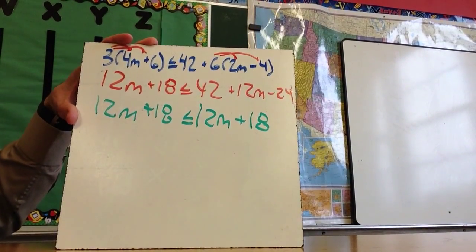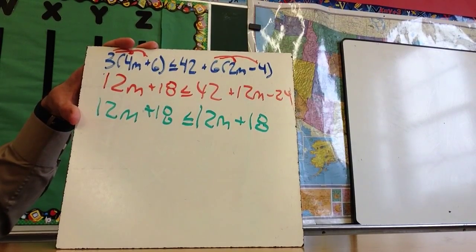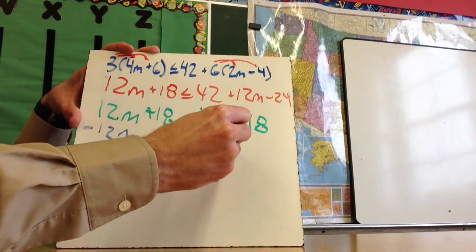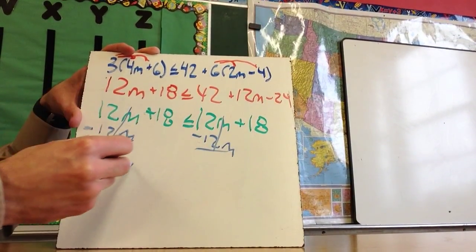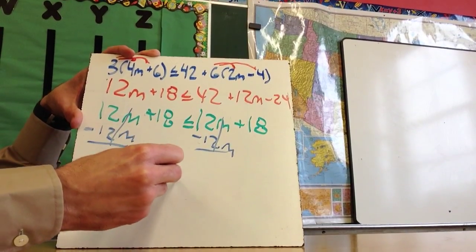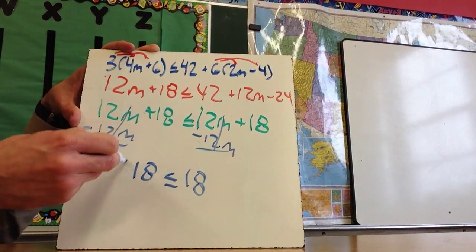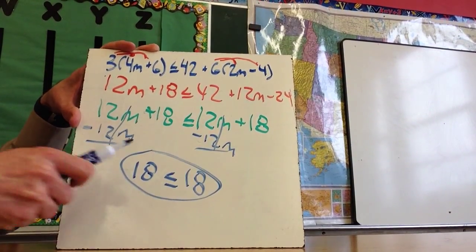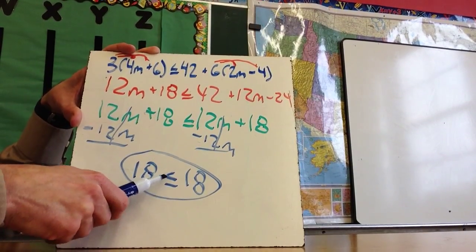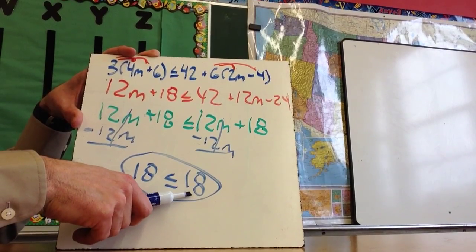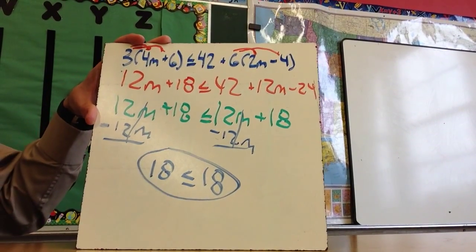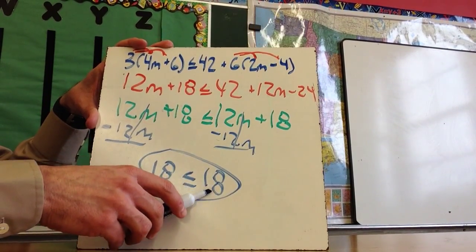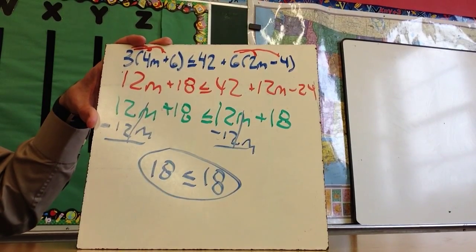Now this one seems probably a little more obvious what my problem is, but the next step would probably be to subtract 12m. And so these two cancel out, so I'm left with 18 is less than or equal to 18. Now this is where a lot of people end up making a mistake, because this is actually a true statement. Because this number has to be less than or equal to this number. It doesn't have to be both. In fact, it can't be both. So it's either less than or it's equal to this number, and 18 happens to be equal to 18 obviously.